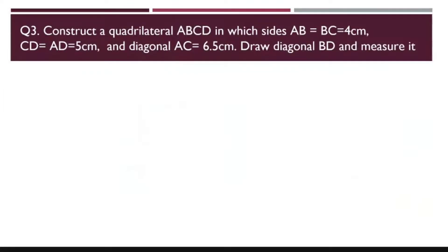Hello everyone, we are doing the third question of the worksheet 2 of class 8, the constructions chapter. Now here we have the question stating that we need to construct a quadrilateral ABCD in which AB is equal to BC is equal to 4 cm.